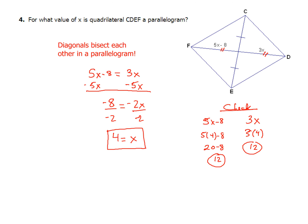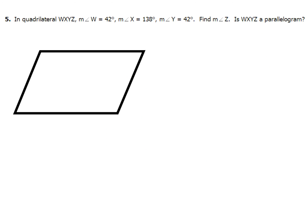Let's get after example number 5. In a quadrilateral WXYZ, the measure of angle W is 42, the measure of angle X is 138, and the measure of angle Y is 42. We've got to do two things: first, find the measure of angle Z.